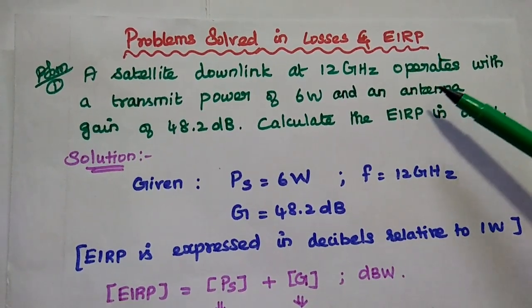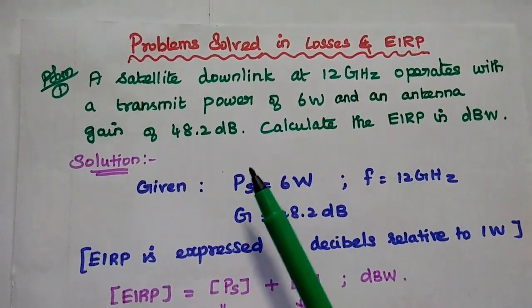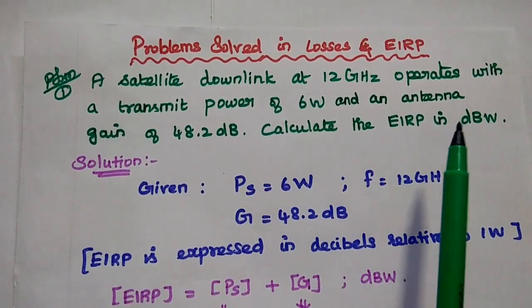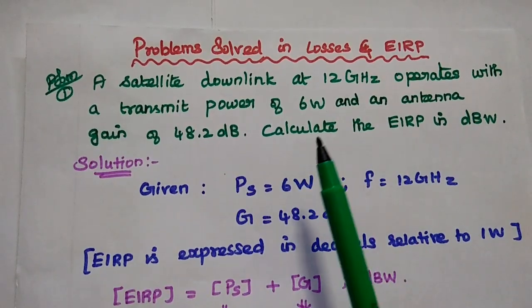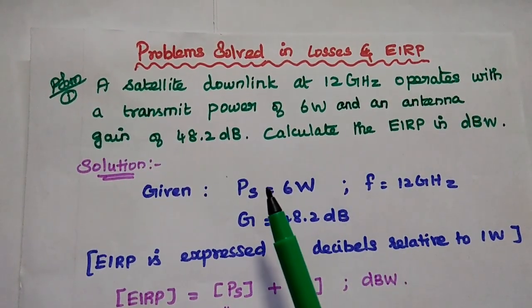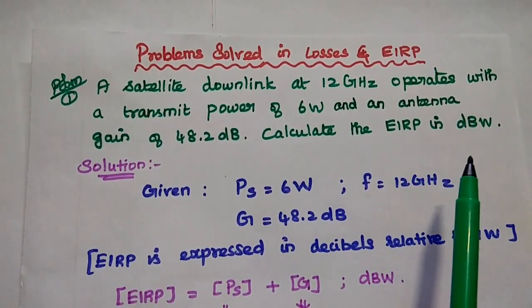Now we are going to solve some important problems in satellite losses. The first problem: a satellite downlink at 12 GHz operates with a transmit power of 6 Watt and an antenna gain of 48.2 dB. Calculate the EIRP in dBW.